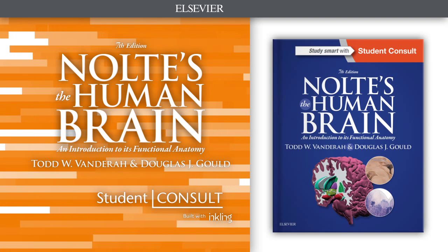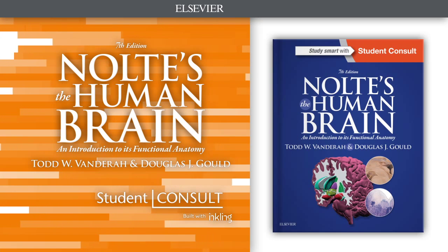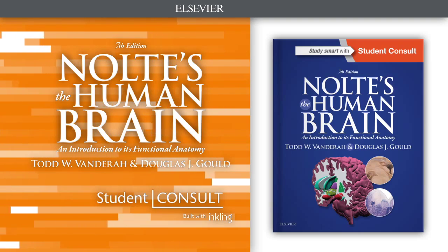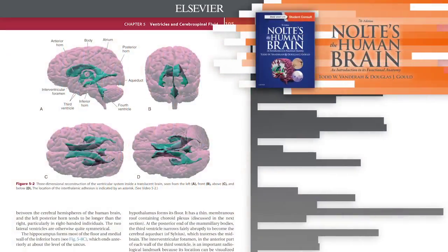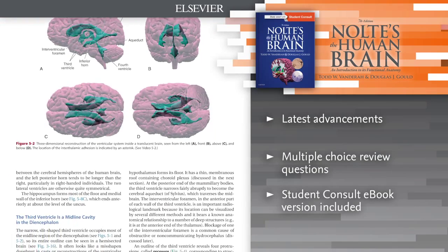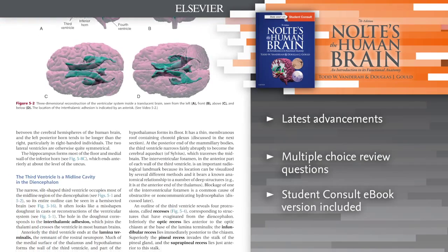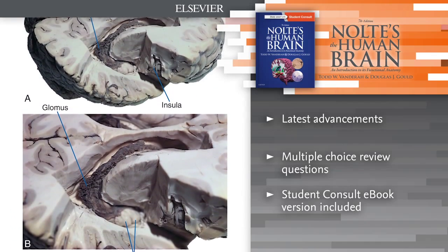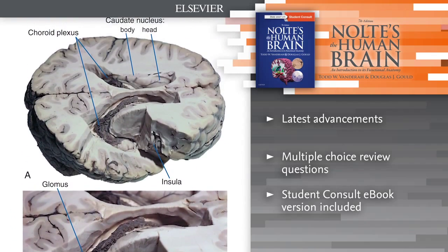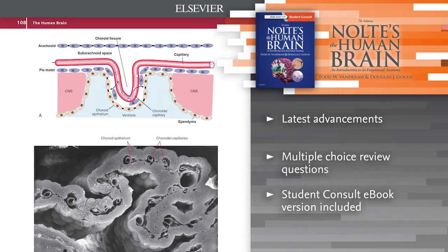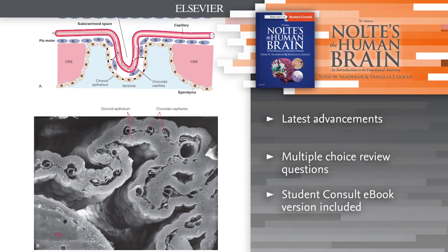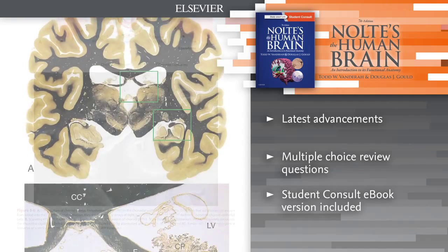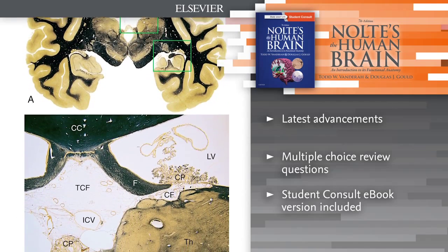Introducing Nolte's The Human Brain, 7th edition. Its highly visual and easy to follow approach helps demystify the complexities of the gross anatomy of the brain, spinal cord and brain stem. Acquaint yourself with the very latest advancements in the field with many illustrations using the most current neuroimaging techniques, reflecting recent developments and changes in understanding.